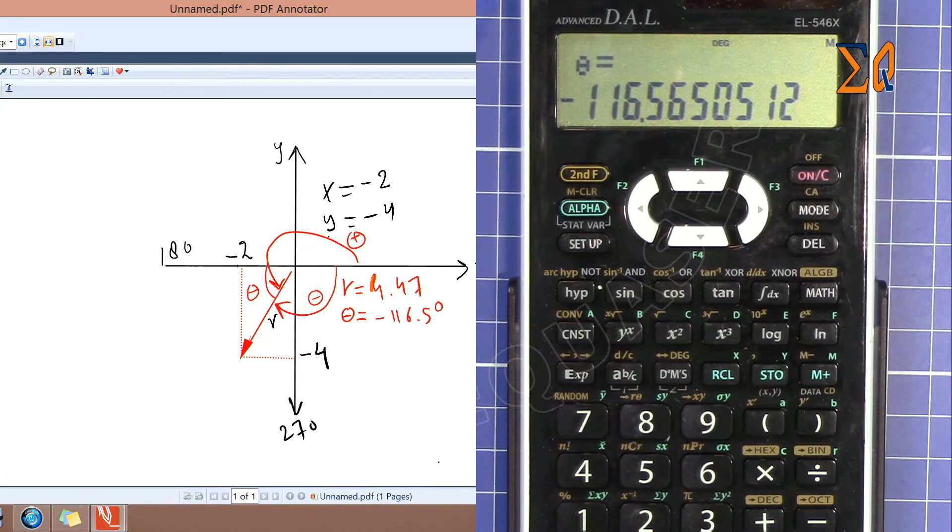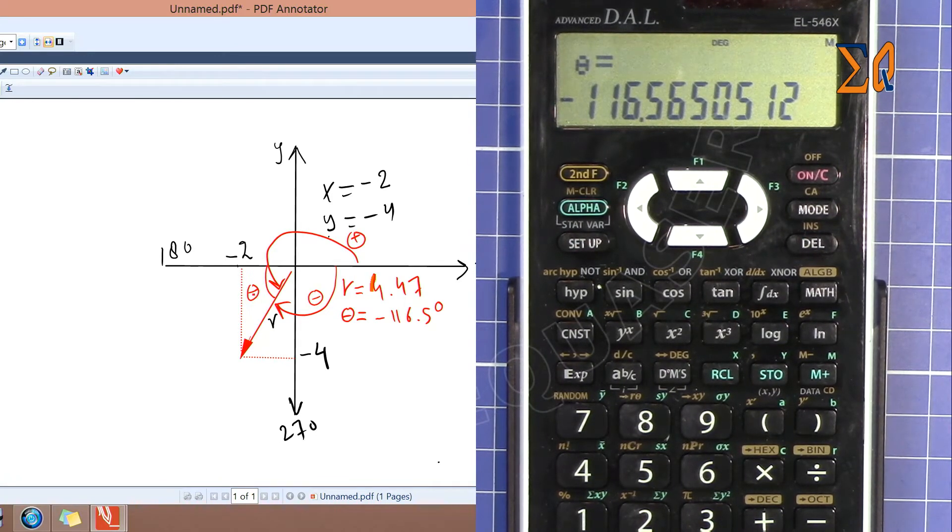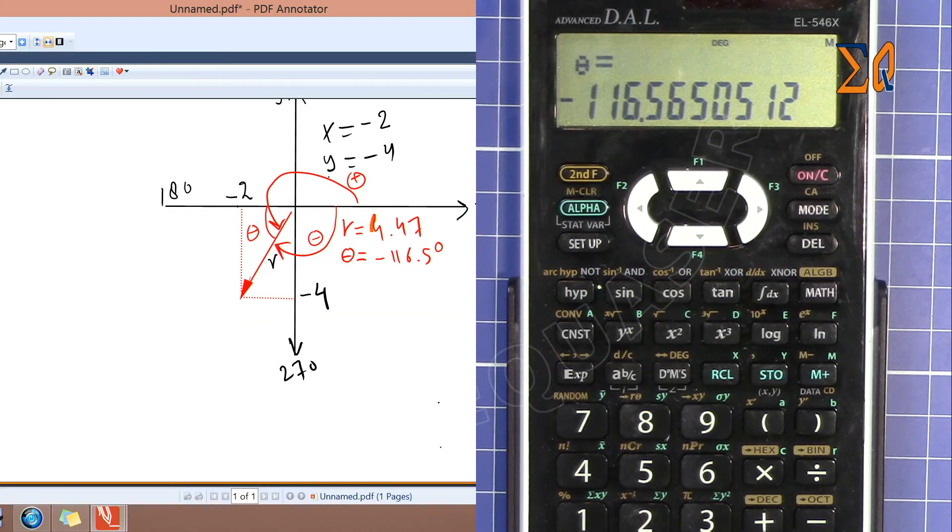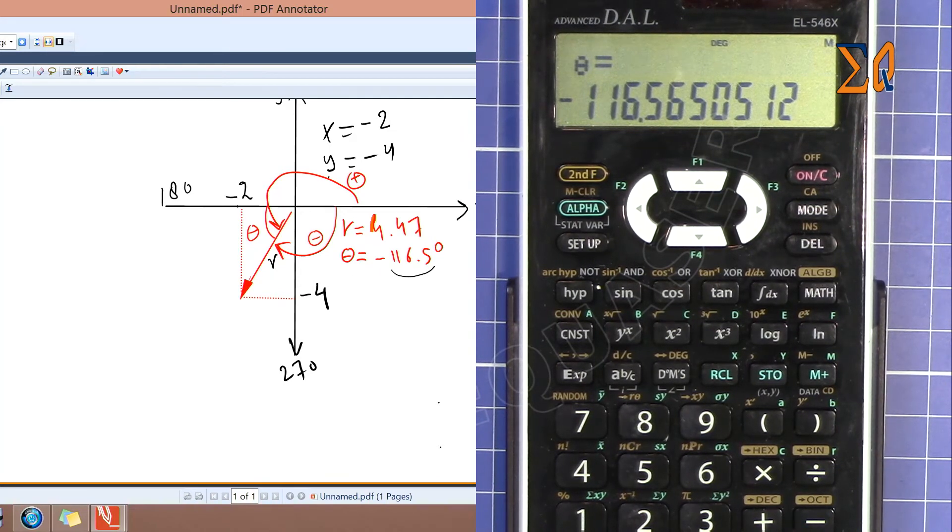The convention is that we should go counterclockwise—this is plus and this is minus. When you go in this direction to get that theta, again we need to do some calculation to get the proper value. This value 116 we find in terms of positive, so we have to subtract 360 minus this value without the minus—the absolute calculation.